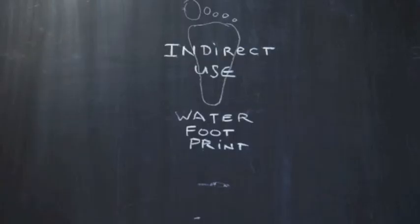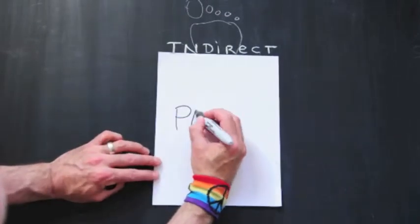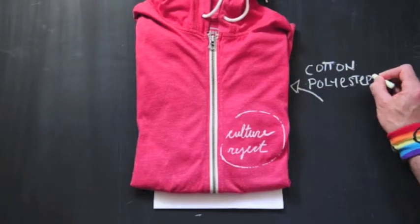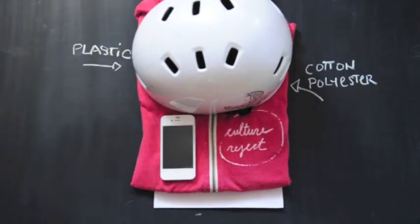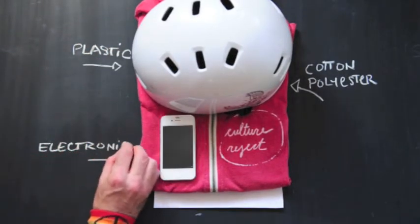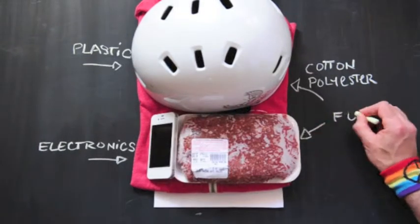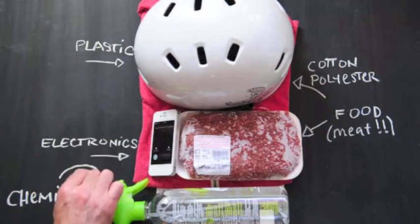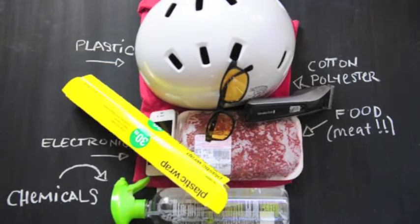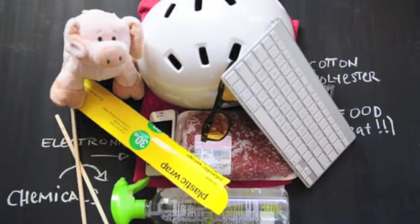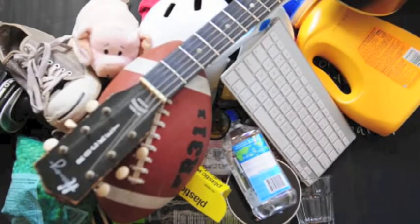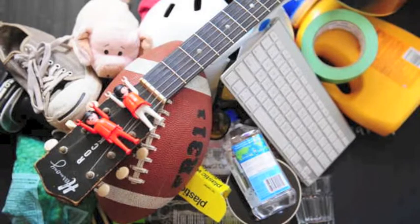Water is used in the making of almost every manufactured product — from paper to clothing made of cotton or polyester, plastics, and electronics. Huge amounts of water are used in the making of food and chemicals, and in all of the things that we use. Industrial processes use water for cooling, diluting, processing, fabricating, washing, and transporting a product. Some use a lot more than others.